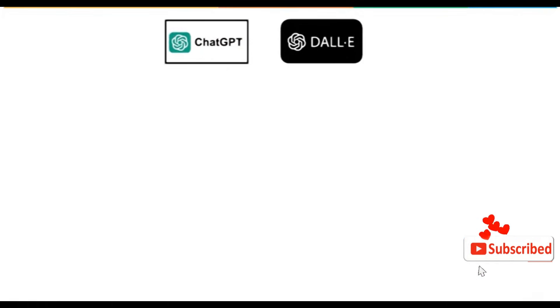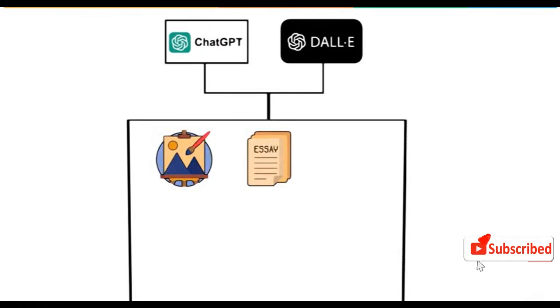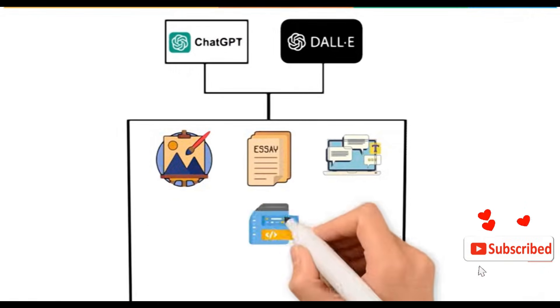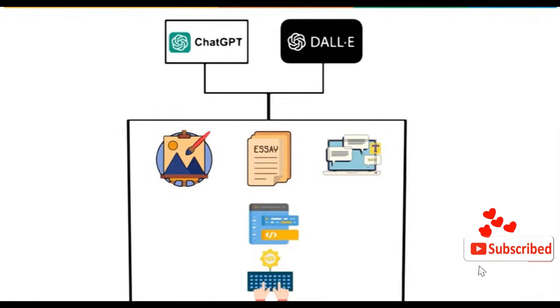Tools like ChatGPT or DALI can create art, write essays, or simulate conversations by generating outputs based on user prompts.